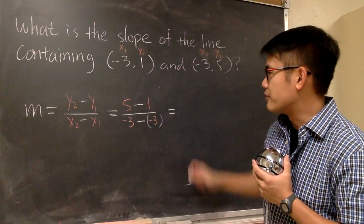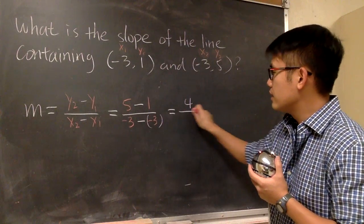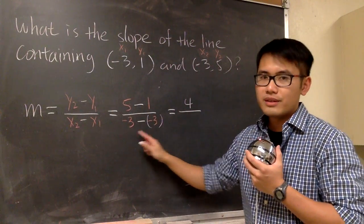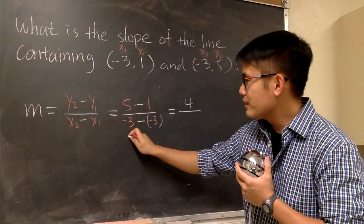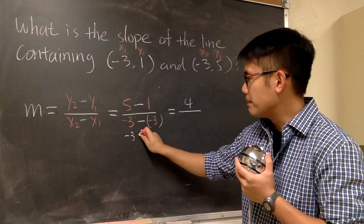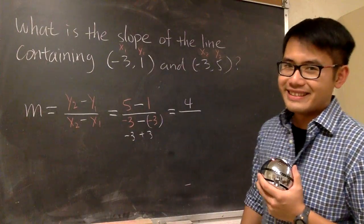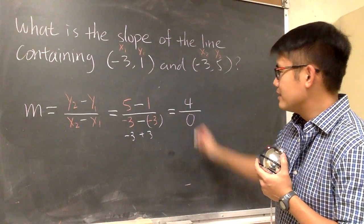Let's do the top first. 5 minus 1, that's 4. And this is over, on the denominator, this is what? This is technically saying -3, and then minus negative becomes plus 3. So what's -3 plus 3? The answer to that part is 0.